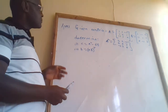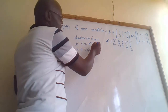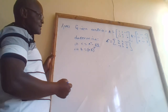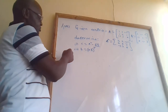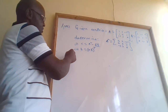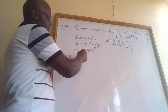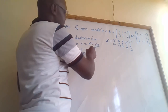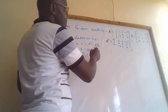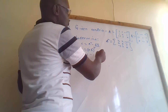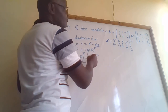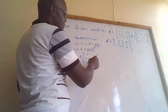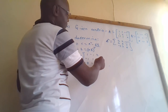Moving on, we still need to get 6B. 6B equals 6 times our matrix B, which has elements: one, negative one, two in row one; negative one, one, one in row two; and zero, negative one, three in row three.